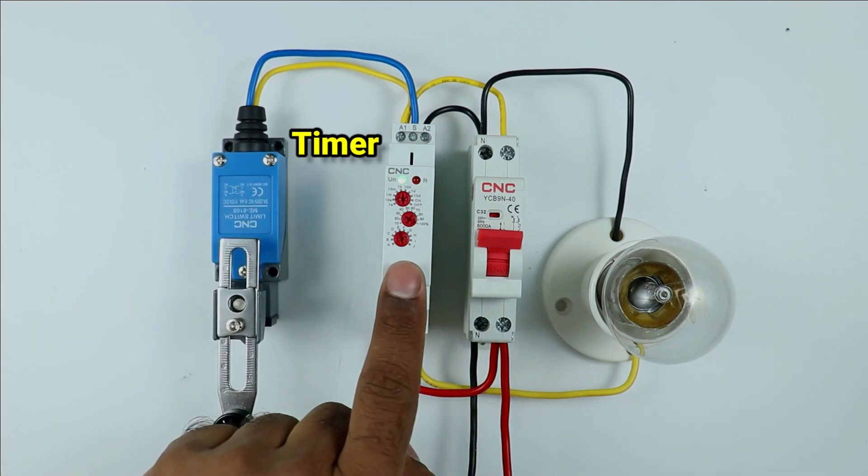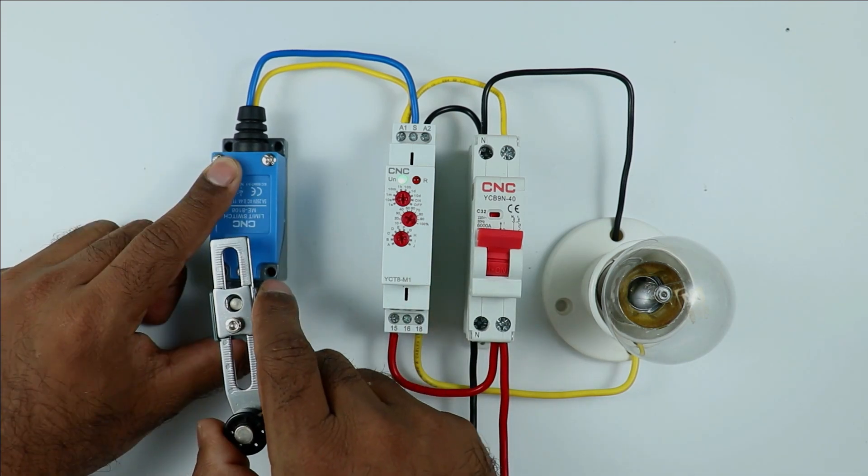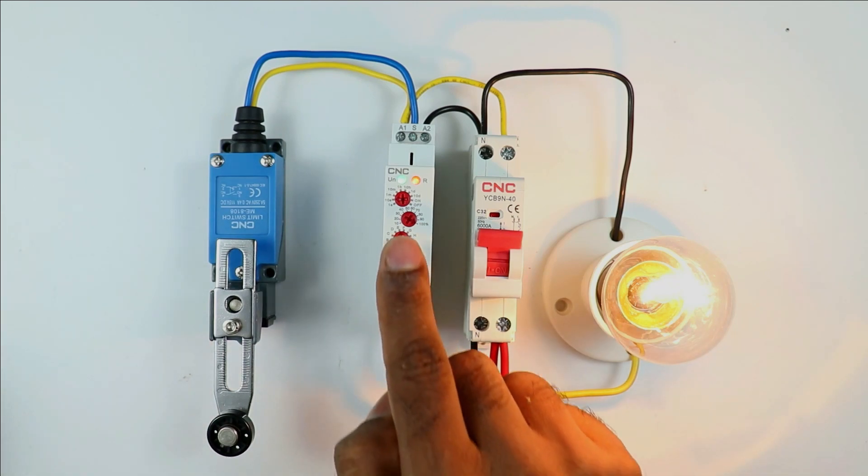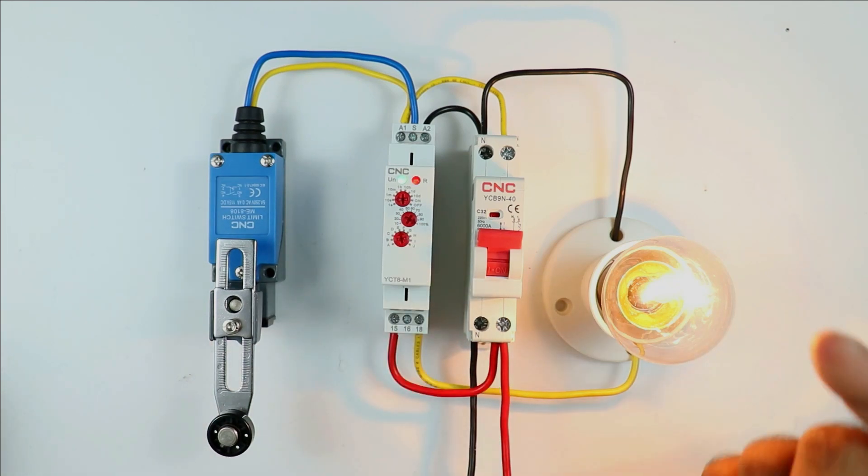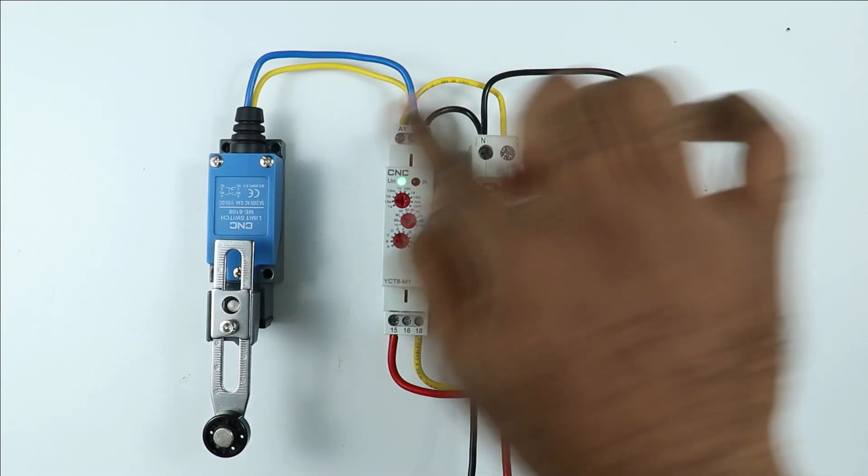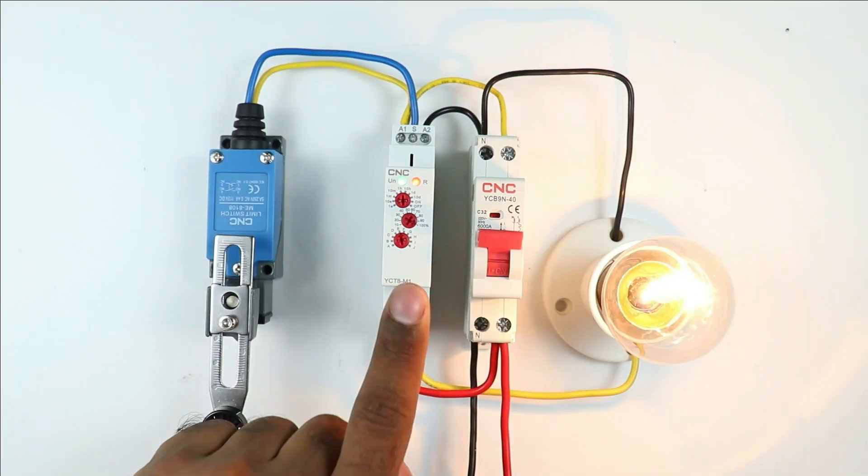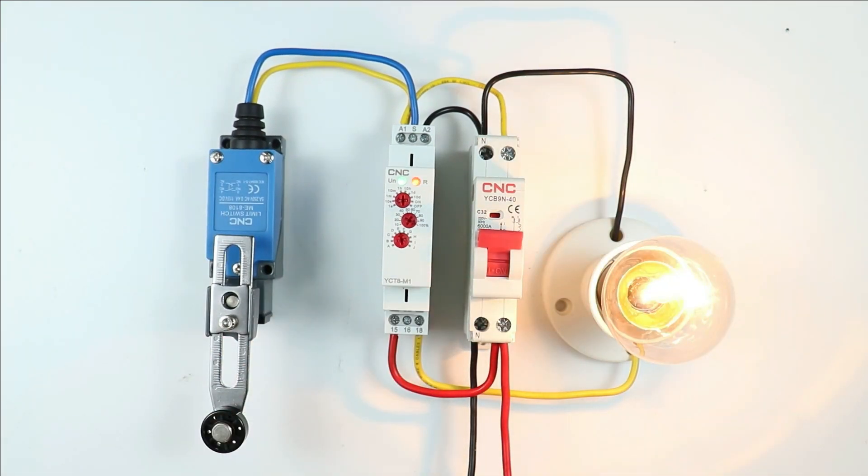How to connect the limit switch with timer so that on operating the limit switch, the countdown of the timer gets started. After completion of countdown, whatever time we set, the load connected will be automatically turned off. Today in this video, we will learn how this limit switch can be connected to an on-delay timer so that our load will be automatically turned off.